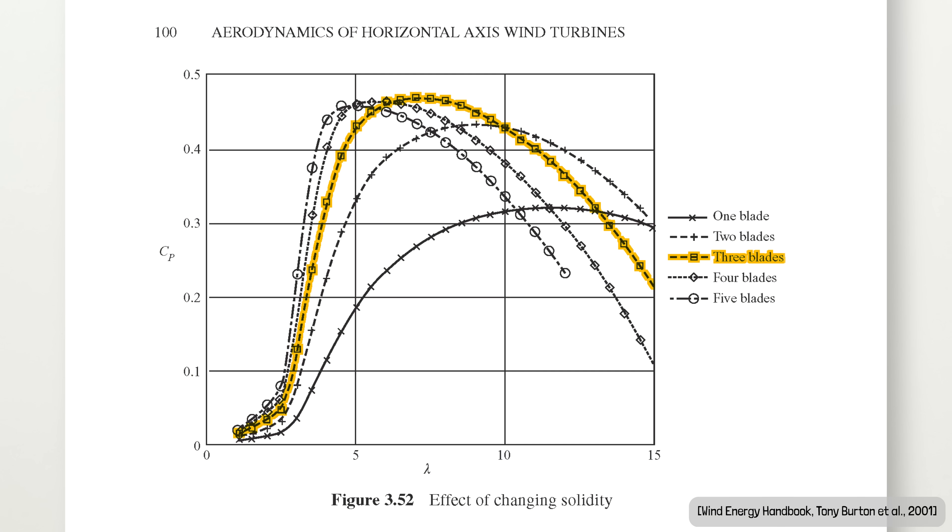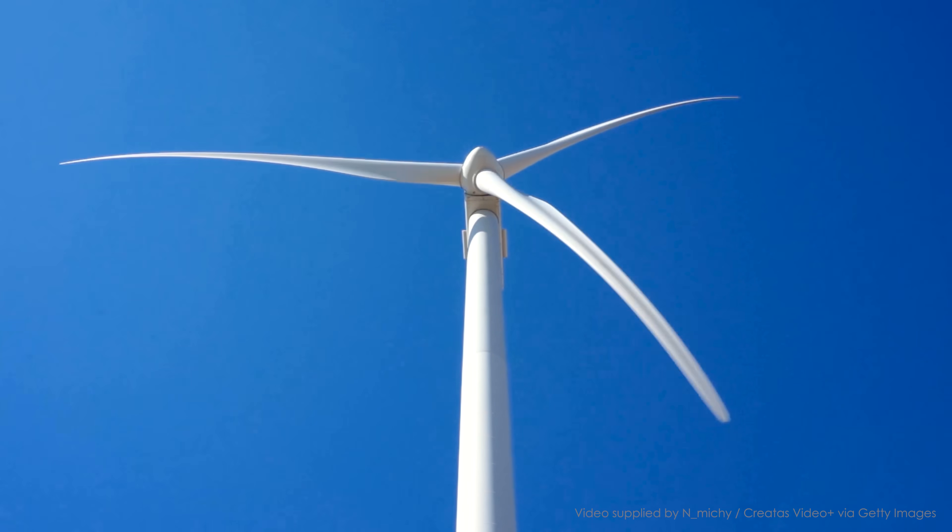Looking again at the efficiency graph, we see that a three-blade rotor achieves the same or better level of efficiency at slower rotational speed than a two-blade rotor, which means for a given wind speed, three-blade windmills can run more quietly, though they are by no means silent.